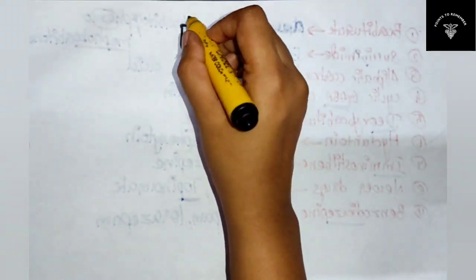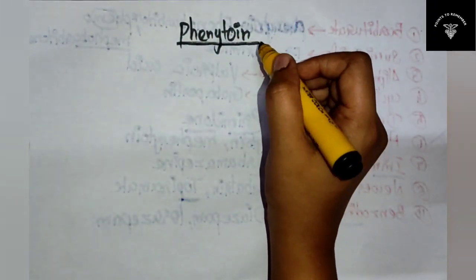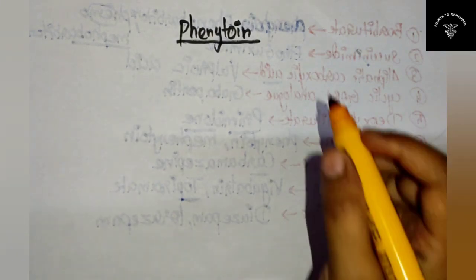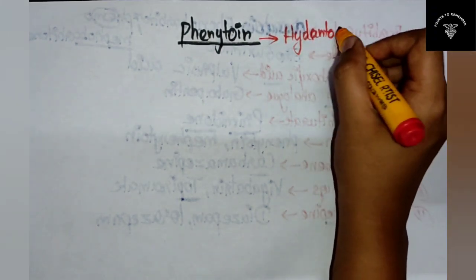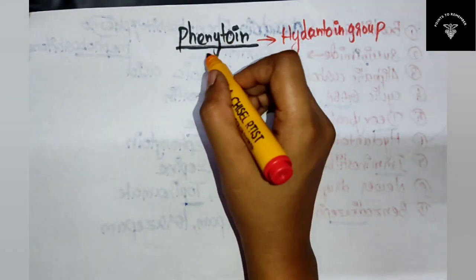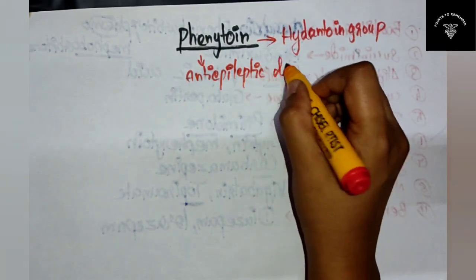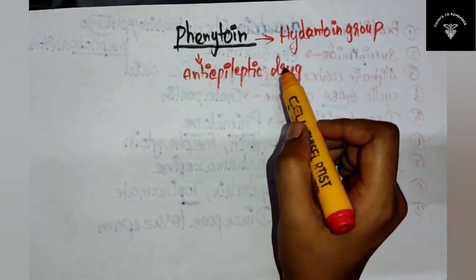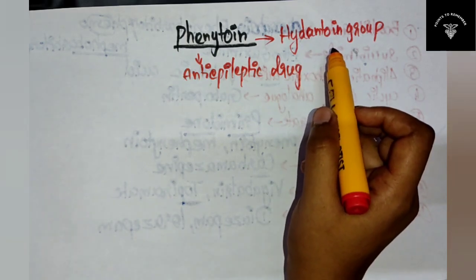Now let's discuss one important anti-epileptic drug - phenytoin. This phenytoin belongs to the hydantoin group. If they ask about phenytoin, you first have to mention it is an anti-epileptic drug used in the treatment of epilepsy, and it belongs to the hydantoin group.